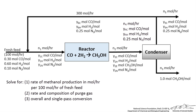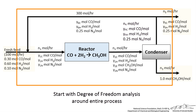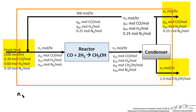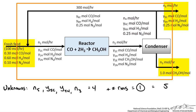It looks like a lot of unknown variables, so we do a degree of freedom analysis to determine if we can solve this problem. Drawing the box around the overall process, we identify 4 unknown variables: N5, Y5C, Y5H, and N3. We then add the number of reactions involved — 1 reaction — giving a total value of 5. We subtract the number of species balances we can perform: carbon monoxide, hydrogen, nitrogen, and methanol — that is 4 balances.